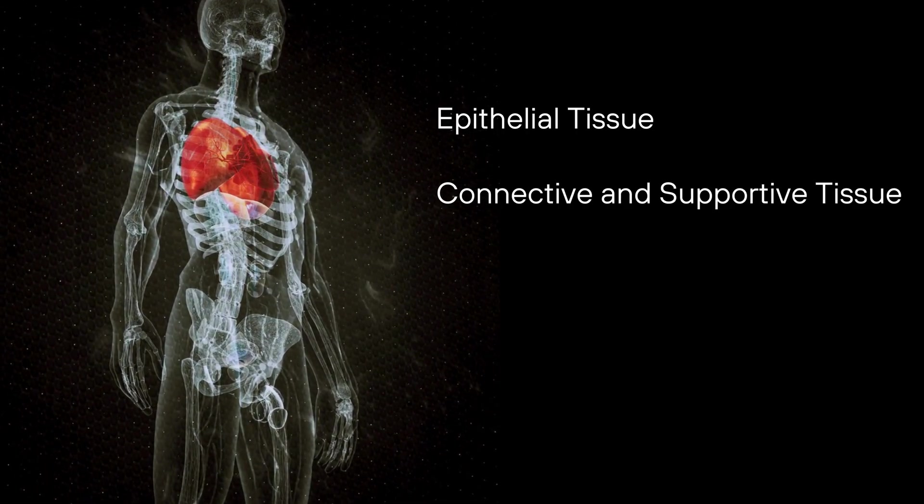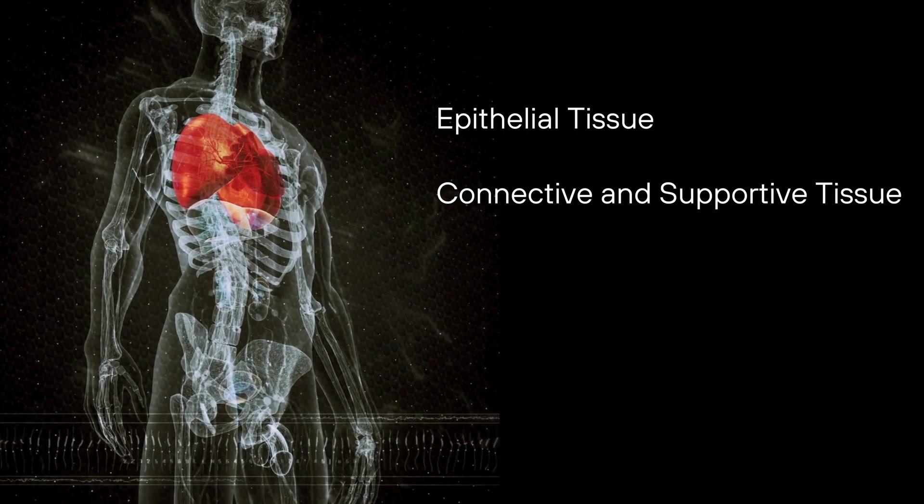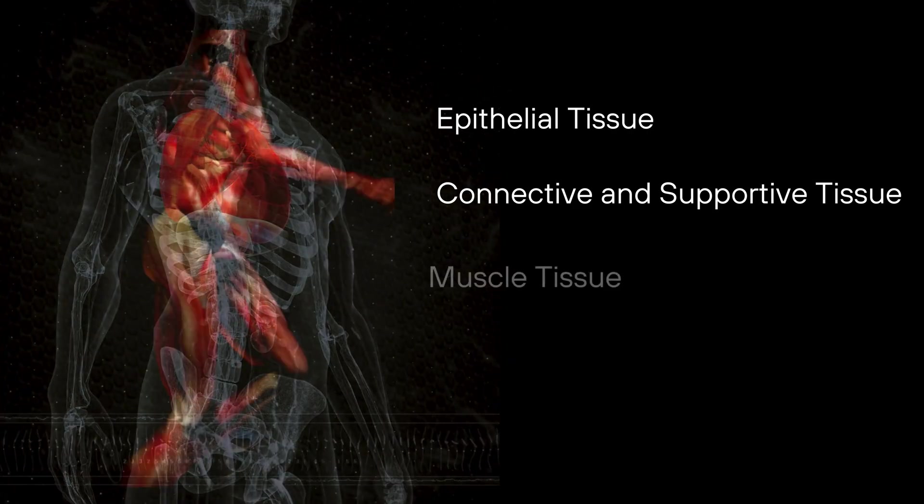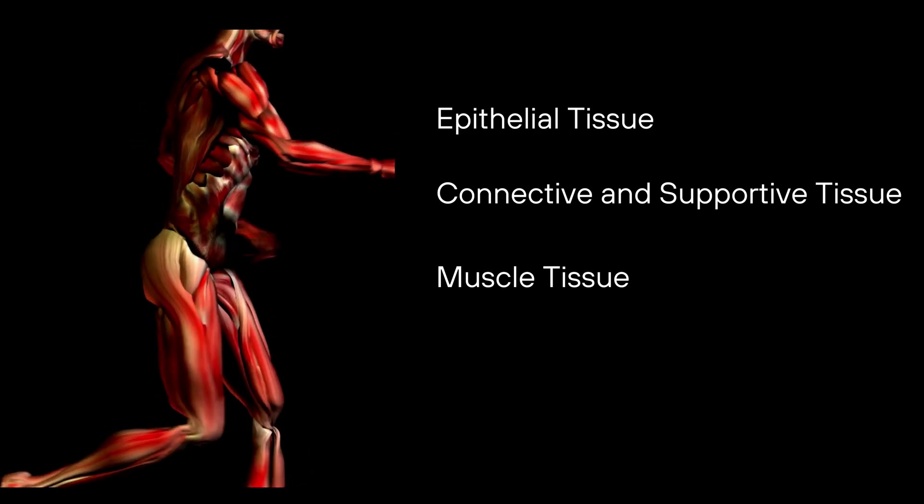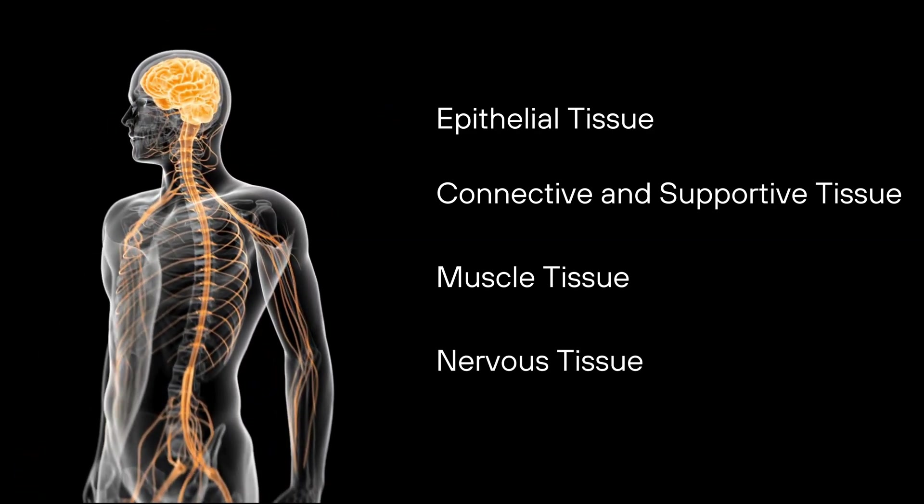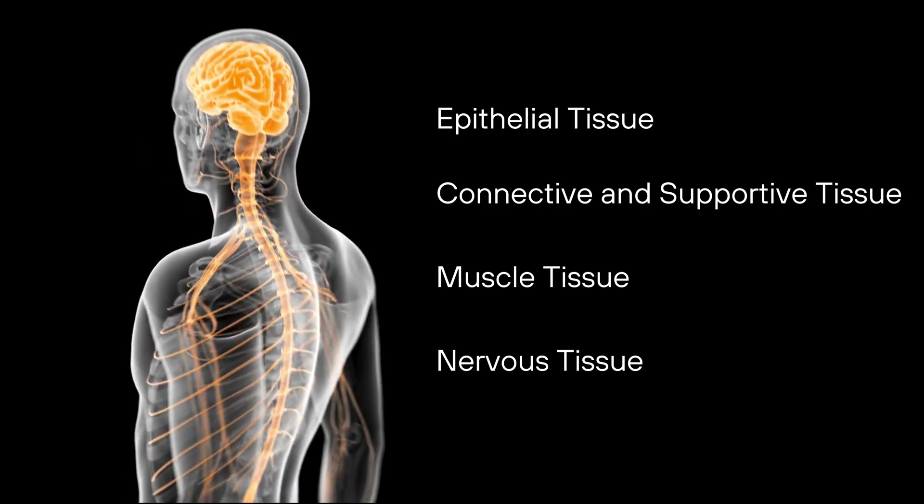Connective and support tissue, which gives our body shape and protects our organs. Muscle tissue, the driving force that enables movement and power. And nervous tissue, the communication network that transmits signals throughout the body.